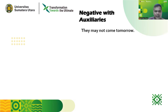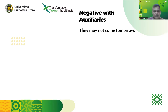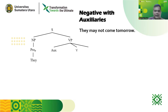Let's first analyze the negative sentence with auxiliaries. We take the sentence 'They may not come tomorrow.' This is a very simple negative sentence and is also applicable to any other negative sentences with auxiliaries. As usual, a sentence is composed of NP and VP — noun phrase and verb phrase. The NP is represented by the personal pronoun 'they.' The focus of this analysis is on the verb phrase, because here is the core of a negative transformation. The verb phrase is composed of auxiliary and verb.